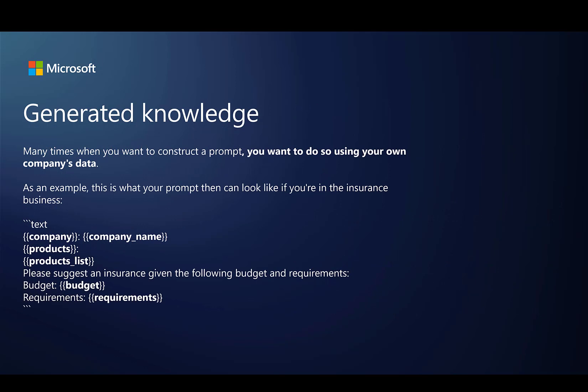Generated knowledge is all about getting knowledge from somewhere — for example, about your company and insurance products — to make sure that once you ask the prompt, the LLM actually knows about it. This is a very good way of prompting in general, because otherwise you'd need to train the LLM on a lot more of your company's data, which could be very costly. So this is a very good middle ground.